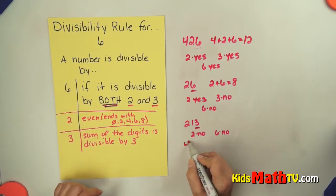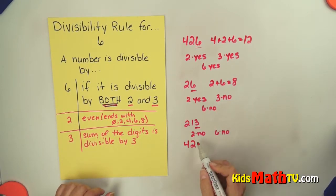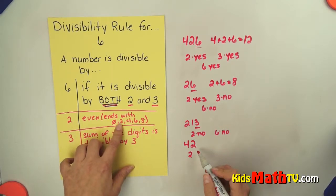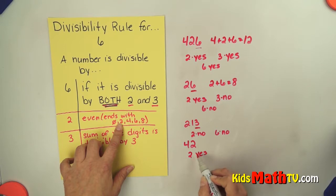One more example. How about 42? Is 42 an even number? Yes, it ends in 2. So it is an even number. It is divisible by 2.